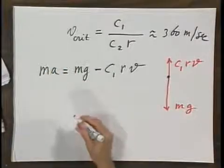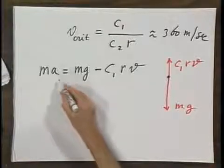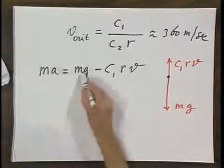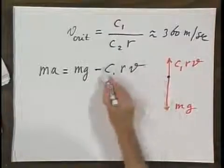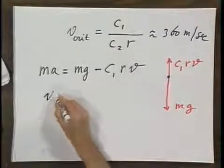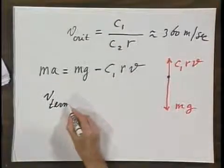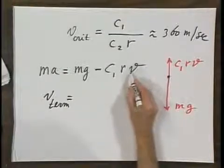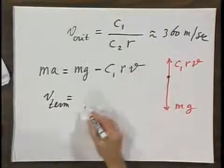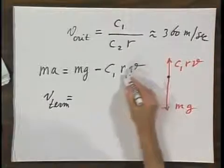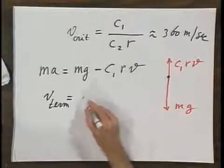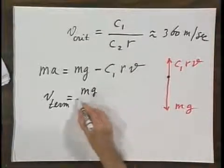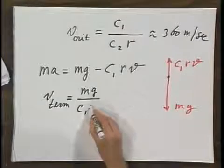If now you want to calculate the terminal velocity, that's the case when this is zero, when mg equals C₁RV. And so the terminal velocity, for the case whereby the resistive force is linear in speed, not proportional to speed squared, is mg divided by C₁R.